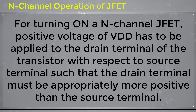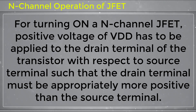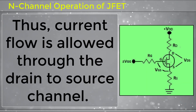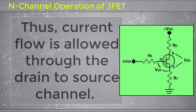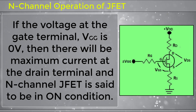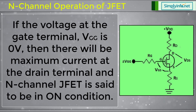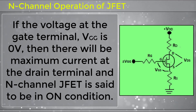For turning on an N-channel JFET, a positive voltage VDD has to be applied to the drain terminal with respect to the source terminal, such that the drain terminal is appropriately more positive than the source. This allows current flow through the drain-to-source channel. If the gate terminal voltage VGG is 0V, there will be maximum current at the drain terminal and the N-channel JFET is said to be in the ON condition.